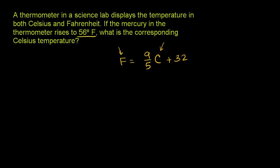So if we subtract 32 from both sides of this equation, we get Fahrenheit minus 32 is equal to 9 fifths times Celsius. Now, to solve for Celsius, we can multiply both sides of this equation times 5 ninths.